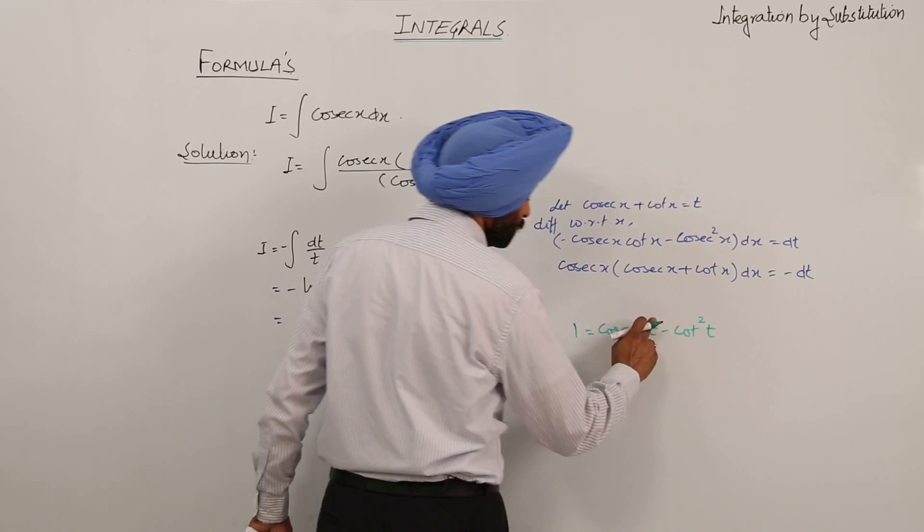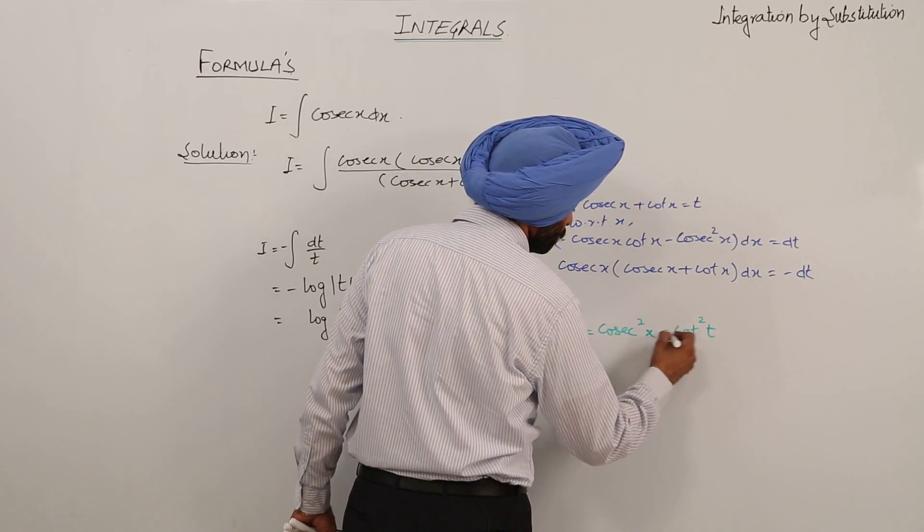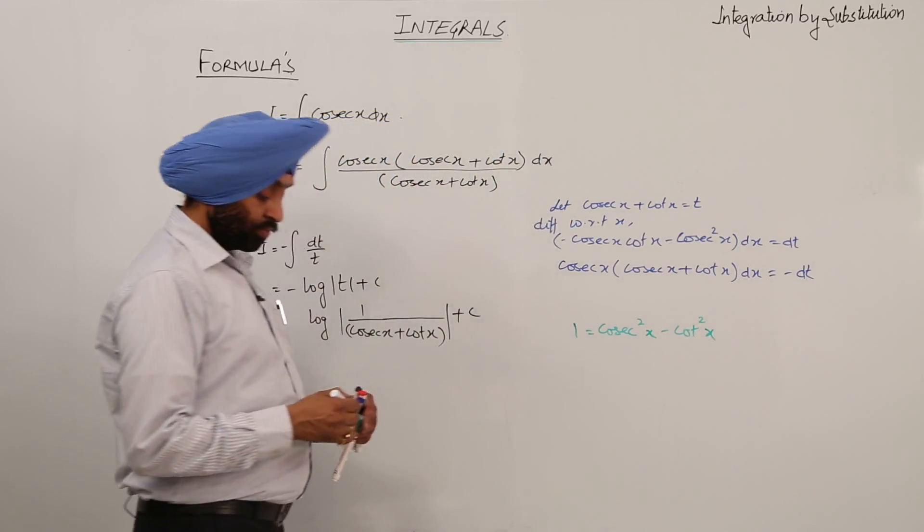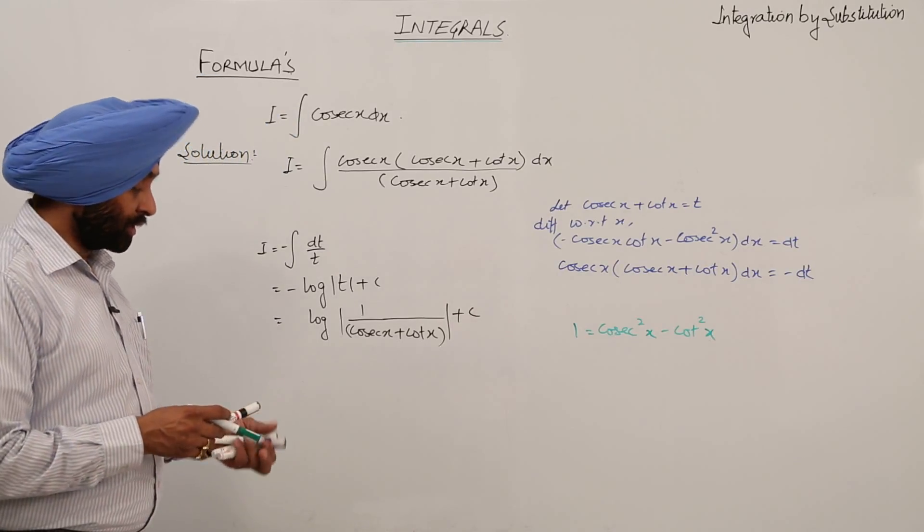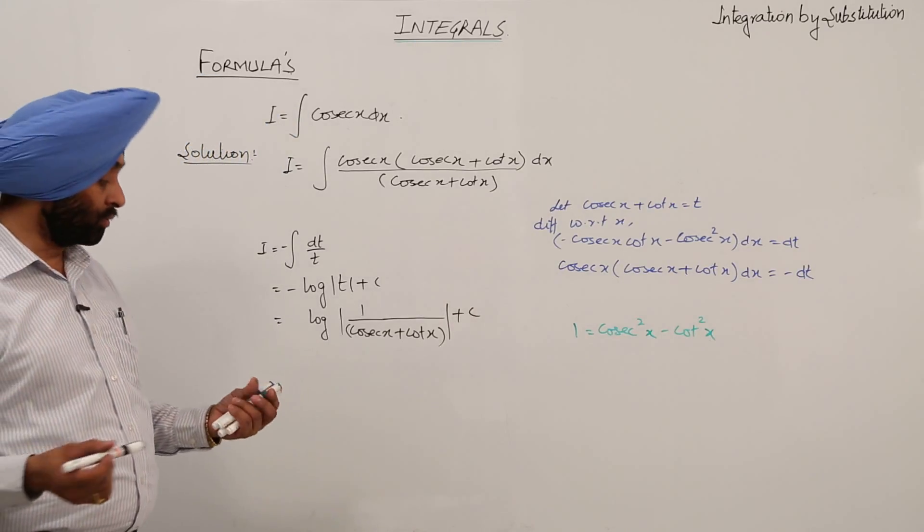Or we can write it in place of t, you can use x now. We have the identity cosecant square x minus cot square x equals 1.